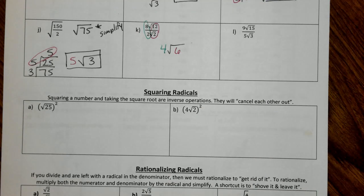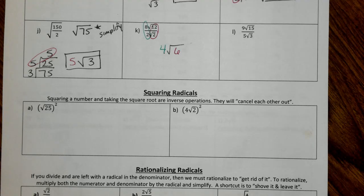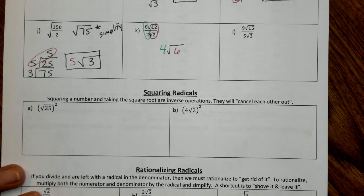We always want to make sure we are simplified. Again, 6 is going to be one of those that is already simplified, a good one to have memorized. But even if you don't know, if you go and you look, it's going to be 2 times 3 of prime numbers. So this is simplified.